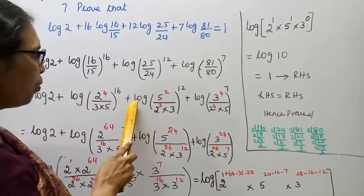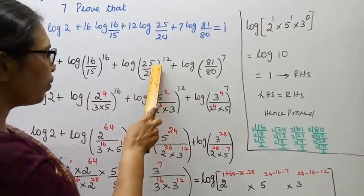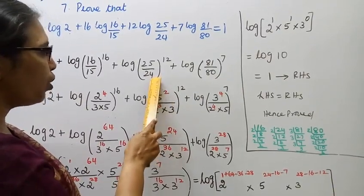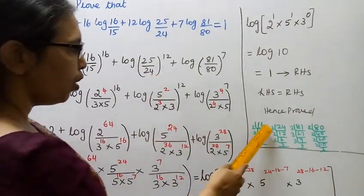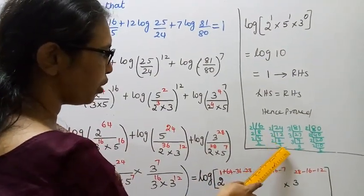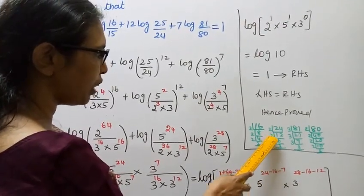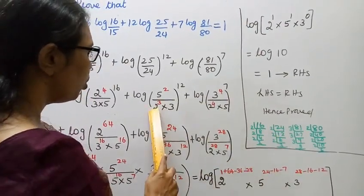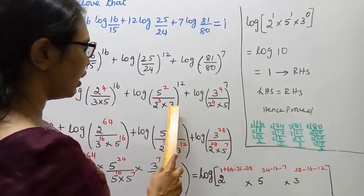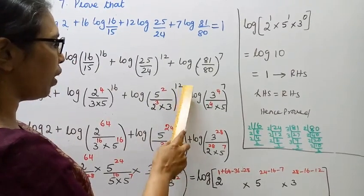Follow carefully. Plus log: 25 is 5 squared. 24 is 2 into 2 into 2 into 3 — that is 2 cube into 3. So (25/24) = (5 squared) / (2 cube into 3), the whole power 12.